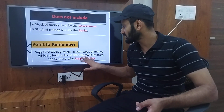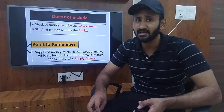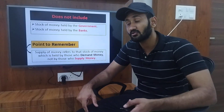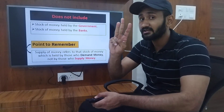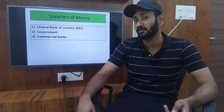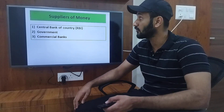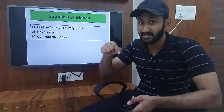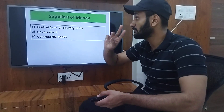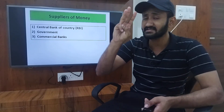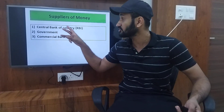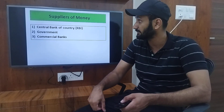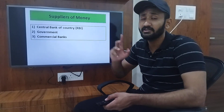Since we are on the topic of money supply, let's also look at who the suppliers of money are. There are three suppliers of money in India. First is the central bank of the country — that is RBI in India. Second is the government. And third is commercial banks. These three are the ones who supply money.